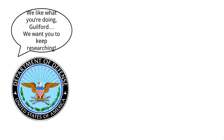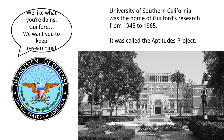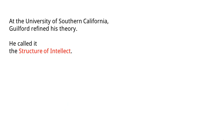Basically, they said, "We like what you're doing, Guilford, and we want you to keep researching." So they sent him to Southern California — he moved to the University of Southern California. Down there was the home of Guilford's research from 1945 to 1965. It was called the Aptitudes Project. At the University of Southern California, Guilford refined his theory. He eventually called it the Structure of Intellect.